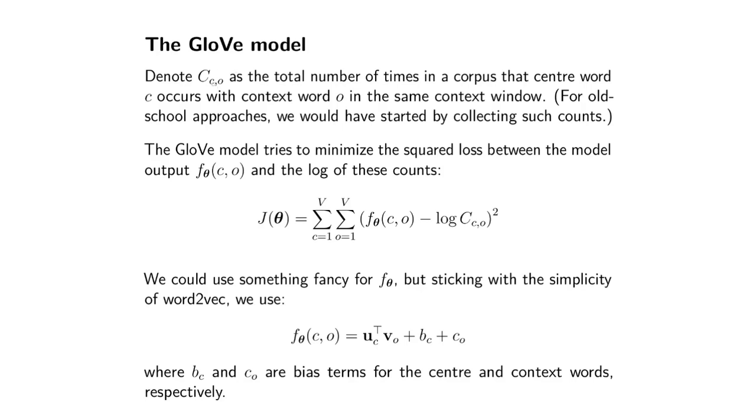What we will do is use this count matrix C. The C row and O column is the total number of times in a corpus that center word C occurs with that context word O.